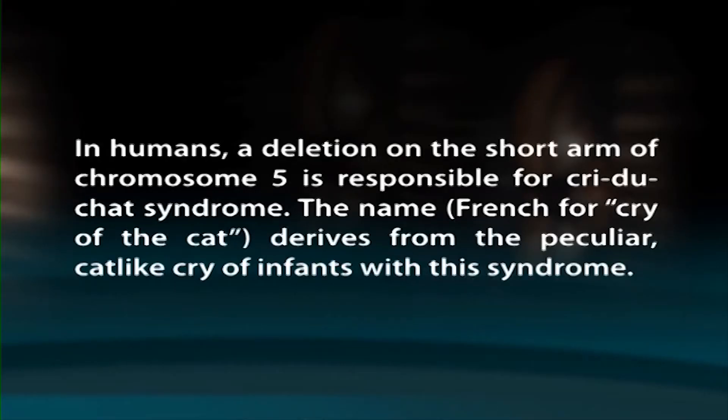Notch is a series of X-linked wing mutations in Drosophila that often result from chromosome deletions. In humans, a deletion on the short arm of chromosome 5 is responsible for cri-du-chat syndrome. The name is French for 'cry of the cat,' deriving from the peculiar cat-like cry of infants with this syndrome. A child who is heterozygous for this deletion has a small head, widely spaced eyes, a round face, and mental retardation. Deletion of part of the short arm of chromosome 4 results in another human disorder, Wolf-Hirschhorn syndrome, which is characterized by seizures and by severe mental and growth retardation.